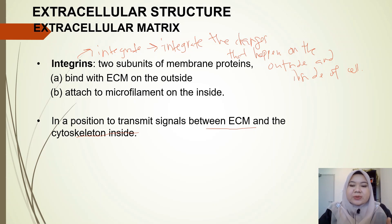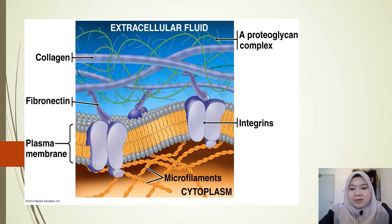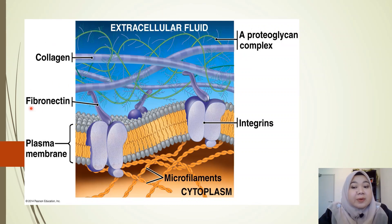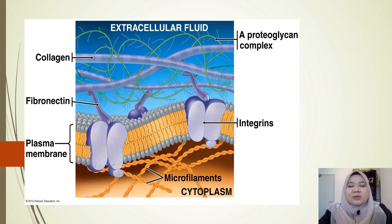Integrins are in a position to transmit signals between the ECM and the cytoskeleton inside the cell, since they are attached to both. In general, the ECM functions in cell communication, provides essential structural support, and also regulates other processes like cell growth, migration, and differentiation.